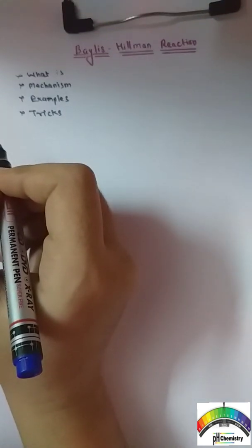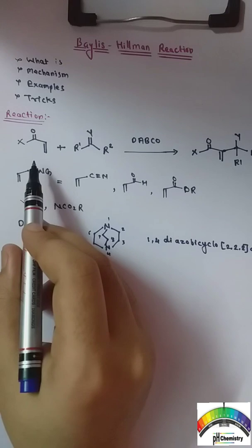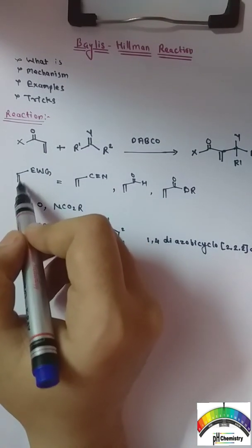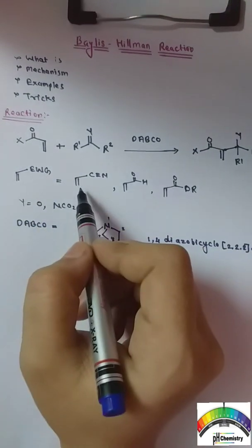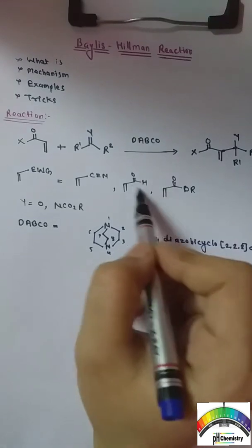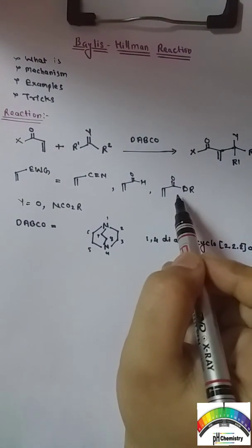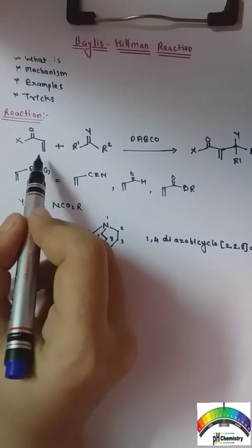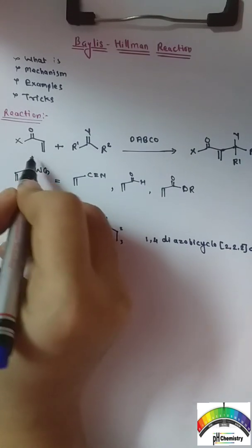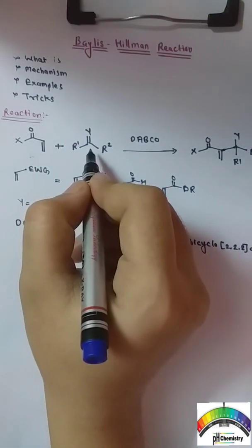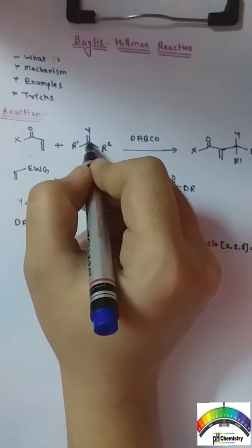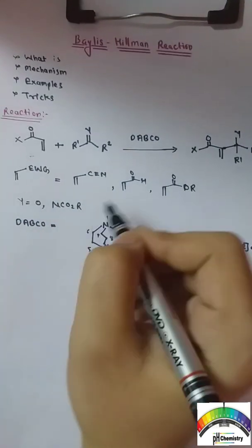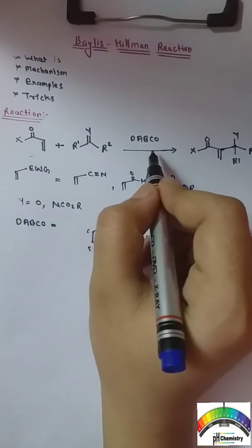What is Baylis-Hillman reaction? The Baylis-Hillman reaction is between the activated alkene. An activated alkene can be any alkene attached to an electron withdrawing group — electron withdrawing group can be cyanide, aldehyde, ester, or ketone. So any alkene attached to an electron withdrawing group becomes an activated alkene, which is the first reactant. The second reactant is any carbon electrophile, where Y can be oxygen or CO2R, and the catalyst used in this reaction is DAPCO.